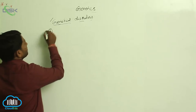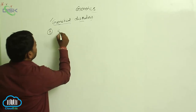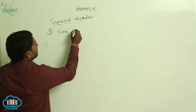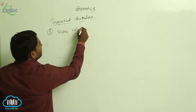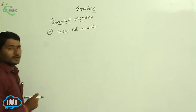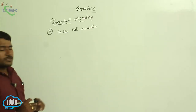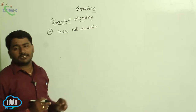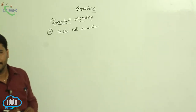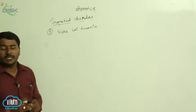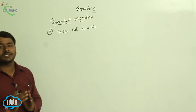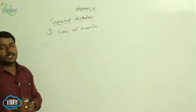Sickle cell anemia. What is this? Sickle cell anemia is another genetic disorder in which the RBC shape or structure is changed into sickle shape.